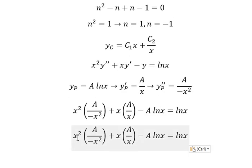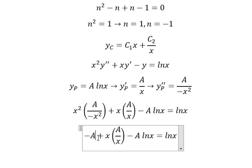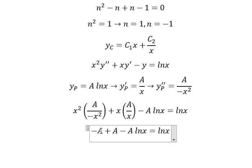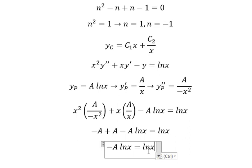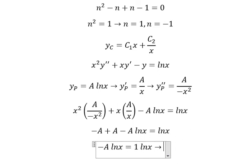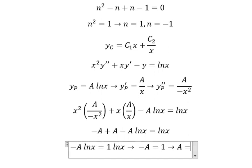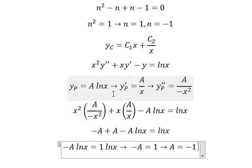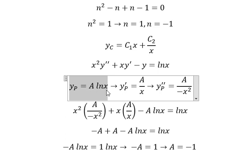We simplify: x squared terms cancel, leaving negative a, and we also get positive a, so negative a plus positive a cancels out, leaving one term. We know the coefficient on the right-hand side is 1, so negative a equals 1, which gives us a equals negative 1.